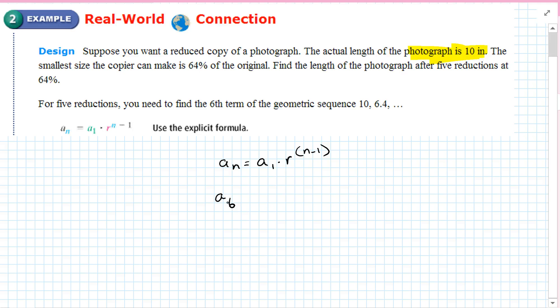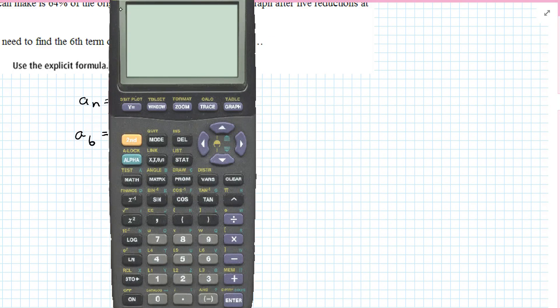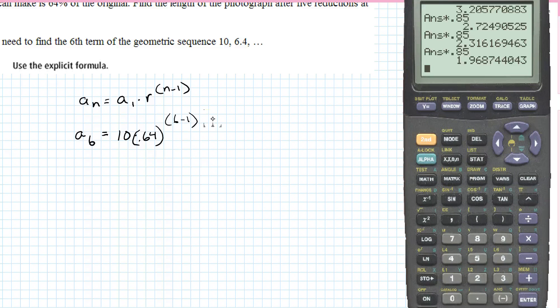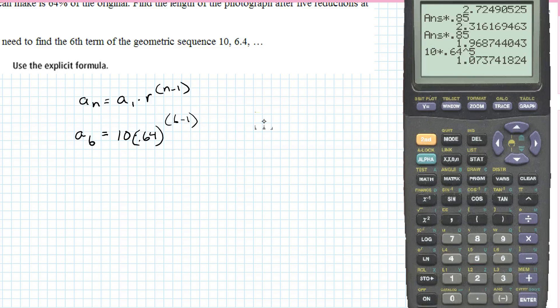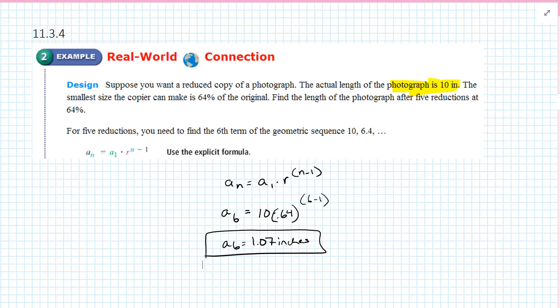To find 5 reductions, you need to find the 6th term. So a6 equals a1, which was 10 inches, times 0.64 raised to the 6 minus 1 power. We can get our calculator out. So 10 times 0.64 raised to the 5th power equals 1.07. So a6 equals 1.07 inches.